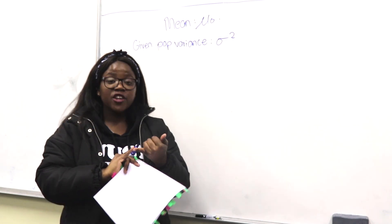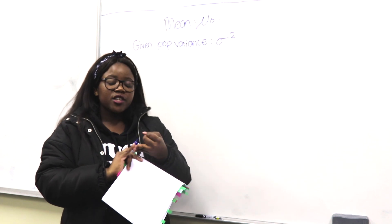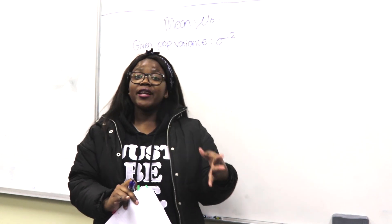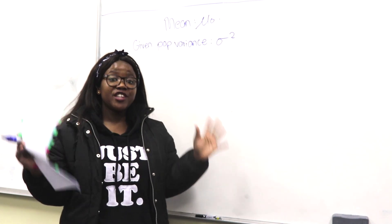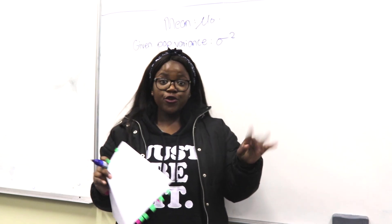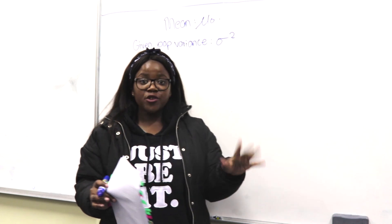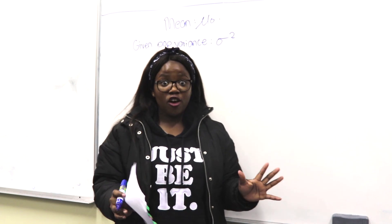Step one: state your null hypothesis and alternative hypothesis. Step two: state your test statistic — the formula you're using and the distribution it follows. Step three: state your rejection region. Step four: calculate your observed value. Step five: calculate your p-value. Step six: state your conclusion based on the question asked.